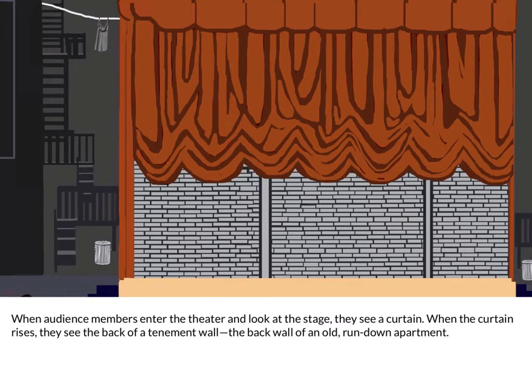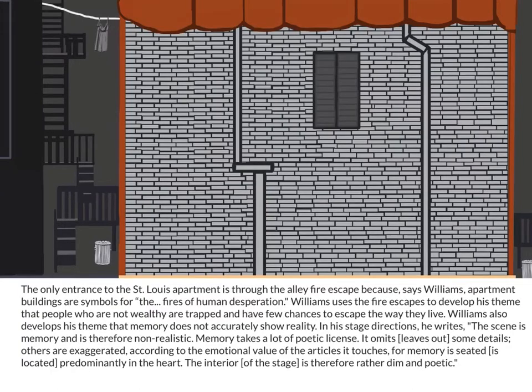When audience members enter the theater and look at the stage, they see a curtain. When the curtain rises, they see the back of a tenement wall — the back wall of an old, run-down apartment. The only entrance to the St. Louis apartment is through the alley fire escape, because, says Williams, apartment buildings are symbols for the fires of human desperation.